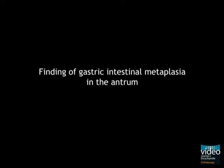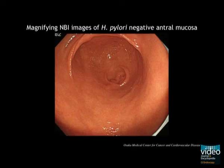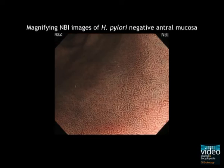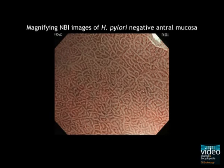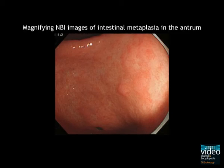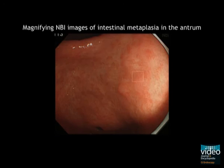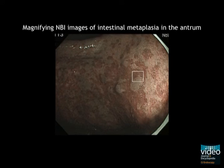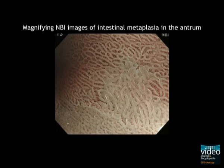The findings of gastric intestinal metaplasia in the antrum are now explained. In H. pylori negative patients, mucosa looks homogeneously reddish and smooth, and a regular groove-type mucosal pattern can be seen in NBI image. Whereas in patients with gastric intestinal metaplasia, mucosa has slightly whitish patchy areas and the surface is uneven. In NBI image, gastric intestinal metaplasia has whitish patchy areas. In magnifying NBI image, an area with intestinal metaplasia has a whitish papillary or villiform structure with the light blue crest on the surface.